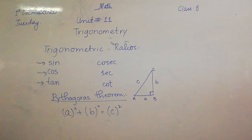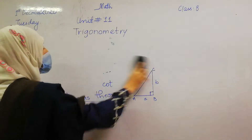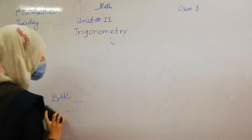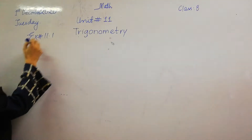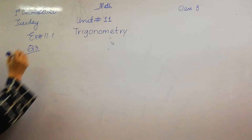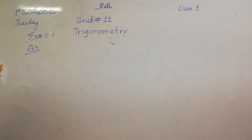Is it clear, children? Now, Exercise 11.1, Question number 3. Given that in a right angle triangle ABC — right angle is on point B.